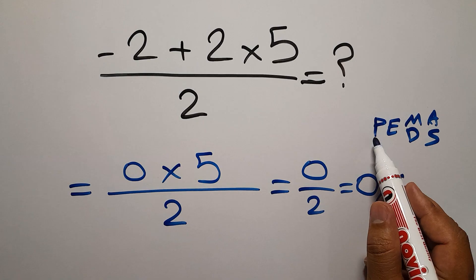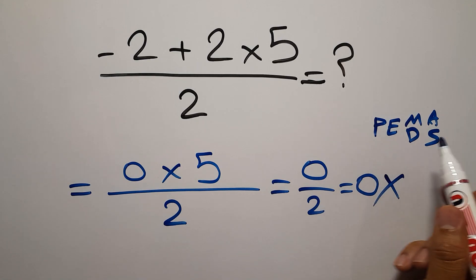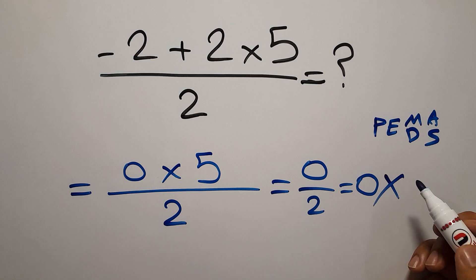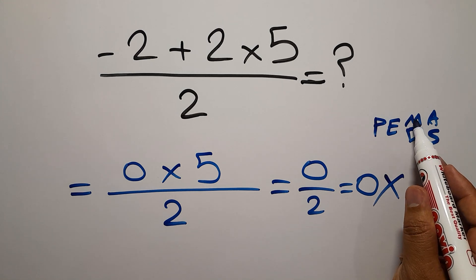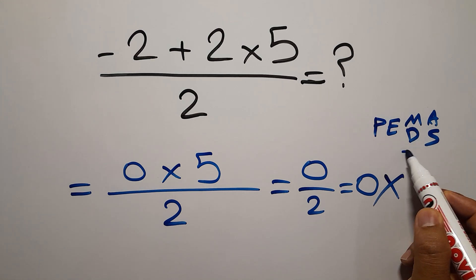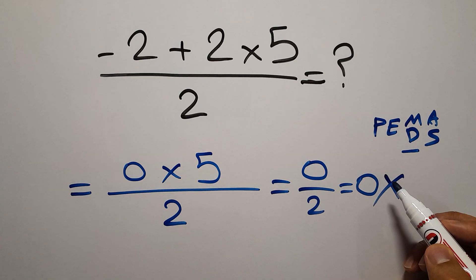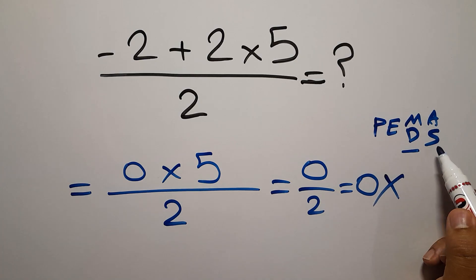First we have to do parentheses, then exponents, then multiplication or division, and finally addition or subtraction. Remember that multiplication and division have equal priority and we have to work from left to right. The same applies to addition and subtraction.